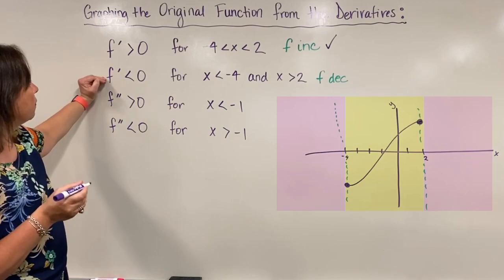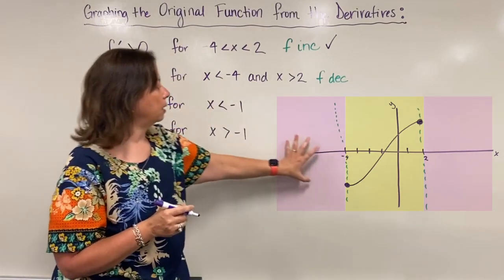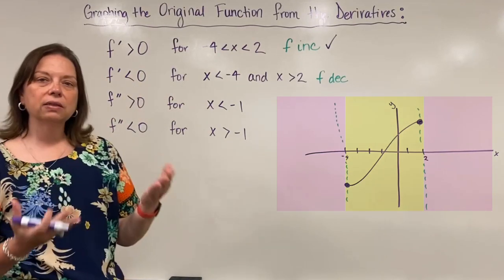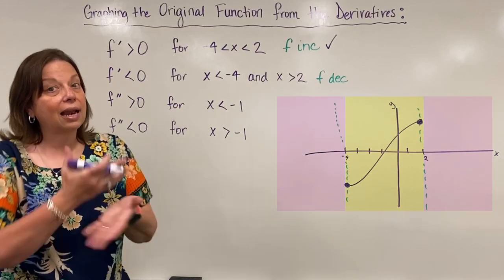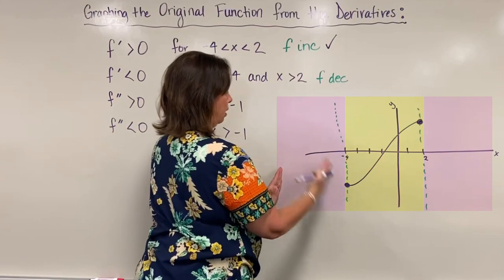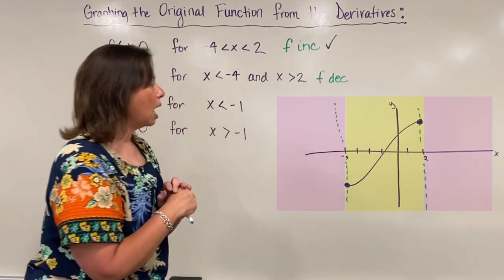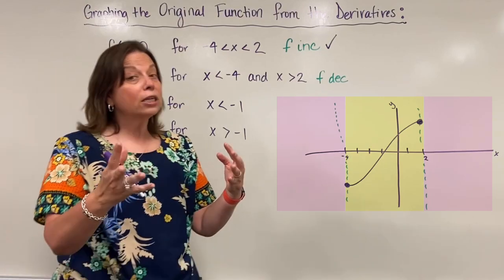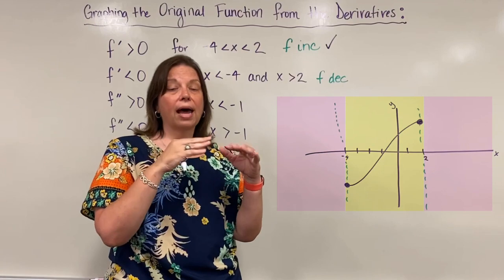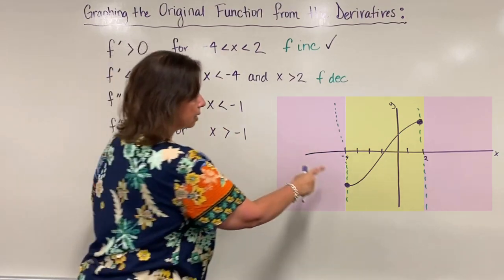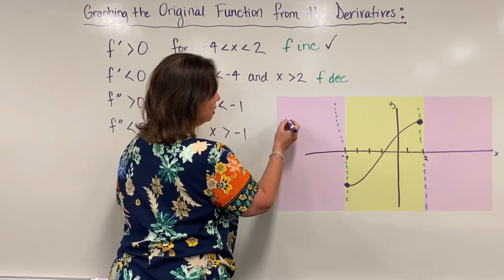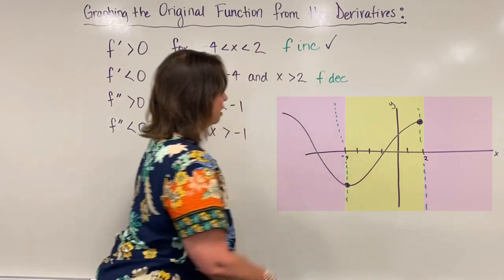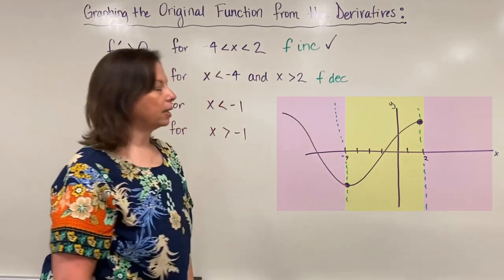Now for the first derivative being negative: in the left zone where x is less than negative 4, and the right zone where x is greater than 2, the function is decreasing. From negative infinity up to the dashed line at negative 4, I draw a decreasing graph that connects continuously to the point at negative 4. I need this to be one continuous function with no breaks or jumps.